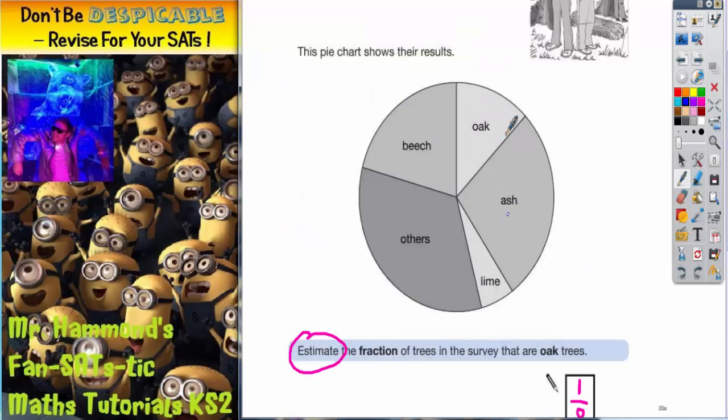So this section here for ash is worth 60.